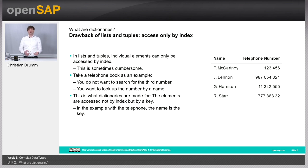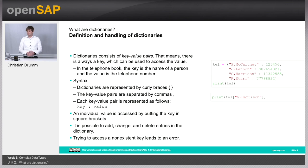In dictionaries, we can look up elements using a key, and all these elements can have a value. Just like in a telephone book, where you have the key — the name — and the value — the telephone number. So how do dictionaries look in Python? Dictionaries consist of key-value pairs. I have a little screenshot of a dictionary from a Jupyter notebook. The syntax for dictionaries is that they are marked by curly braces.